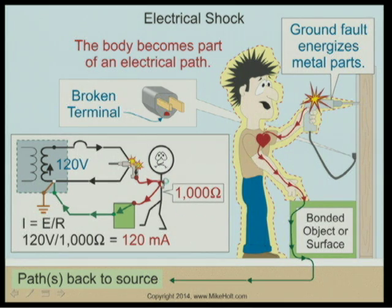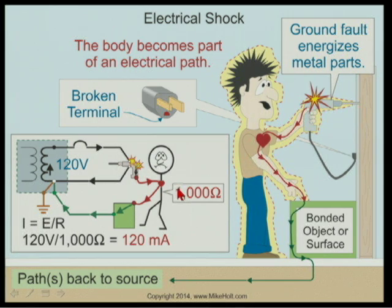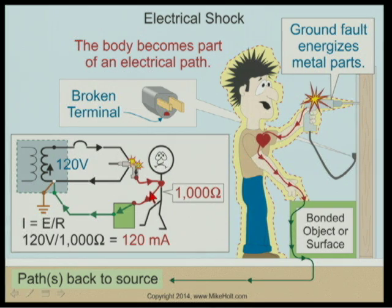With a 1,000-ohm resistor in parallel with this load, if I measure the voltage across this person's two hands, it's 120 volts. Using Ohm's Law - I = E/R - electrons are not going to ground, they are going to the source. The current is 120 volts divided by 1,000 ohms, which equals 120 milliamperes, or 0.12 amperes. That number means nothing until we put it in context.